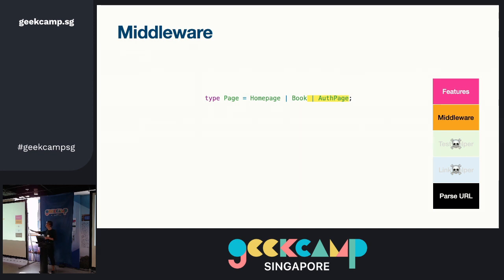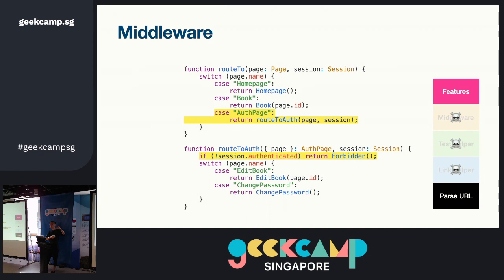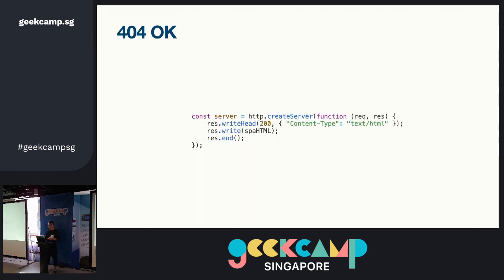Middleware — even easier. If I have a page and my application has authenticated pages, just create subpages. I have an auth page; auth page consists of edit and change password. In the original switch statement, just pass off all the subpages of your authenticated pages to another function. You can do it however you want. You do not need any middleware or any library support — this is your own code, there's no library code here.